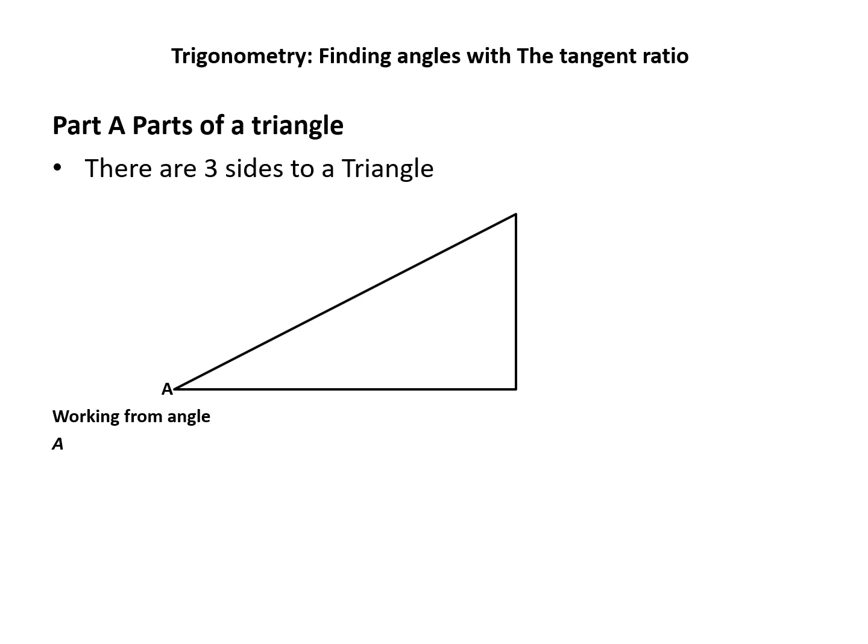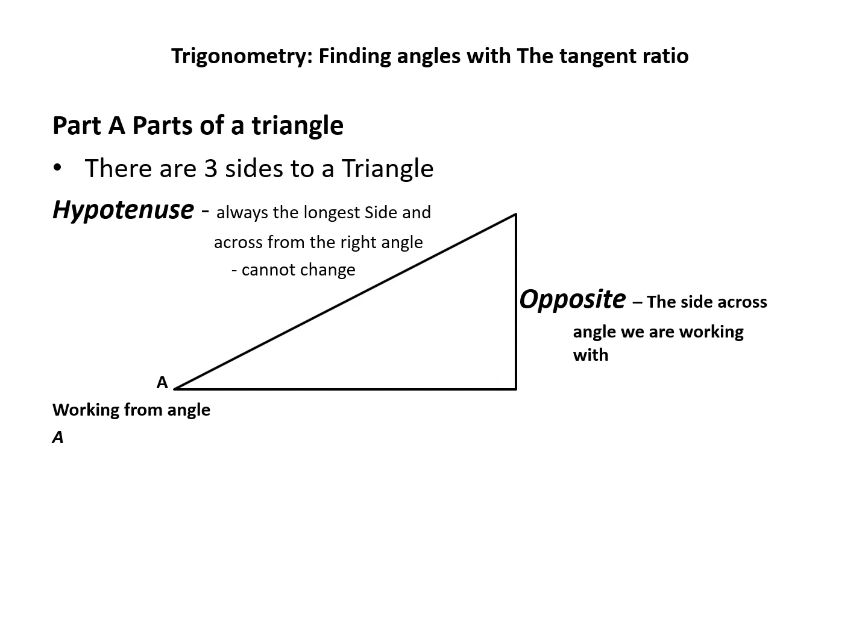To do this, we need to find the three sides of a right angle triangle. Everything works off of the angle that we are working with. The three sides are the hypotenuse, which is always the longest side, always across from the right angle and it cannot change.